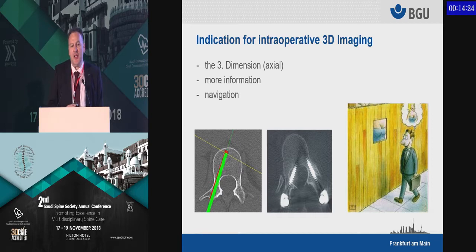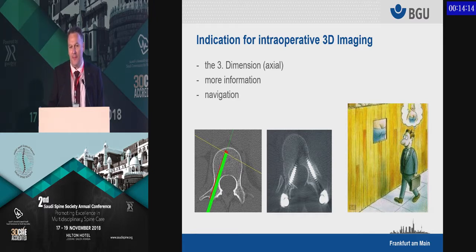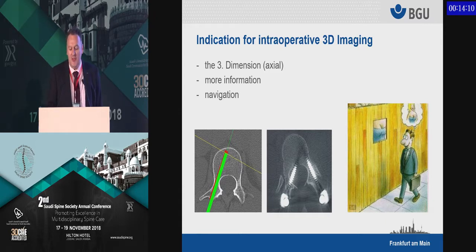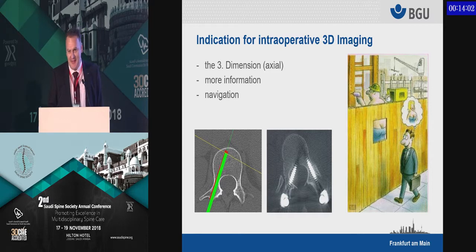3D imaging gives you the third dimension, and that's especially important in spine surgery because you want to have the axial level. You want to see where your implant is really going. You need it for navigation as well, and more information helps you to avoid significant mistakes.